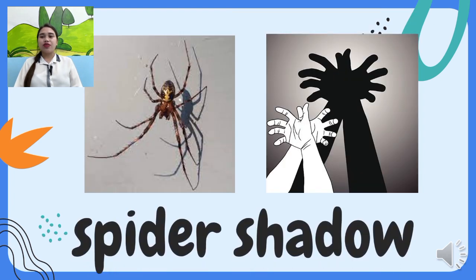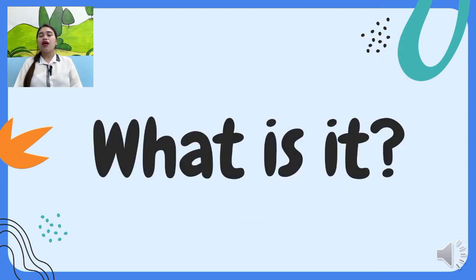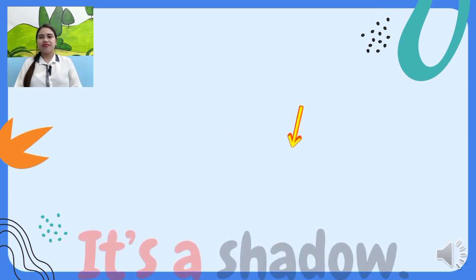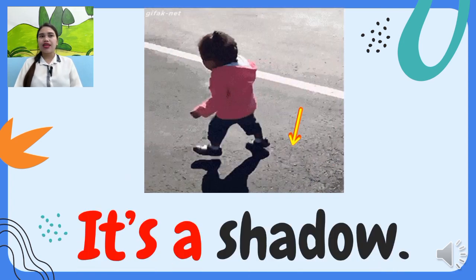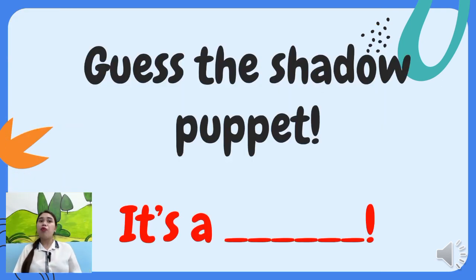Spider shadow. Snail shadow. What is it? It's a shadow. It's a shadow puppet. Now guess the shadow puppet, then you answer.